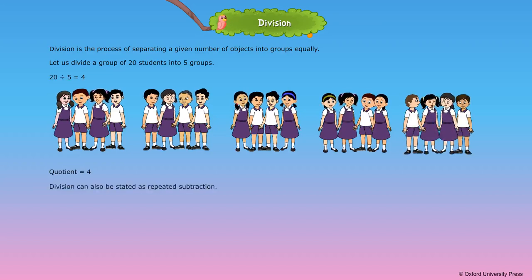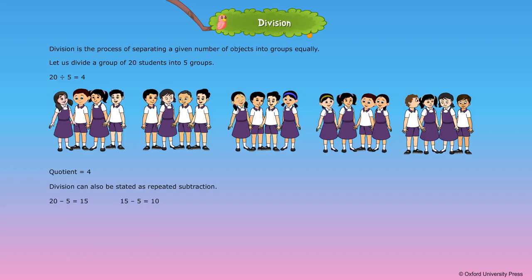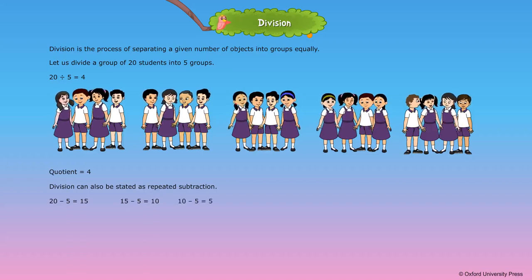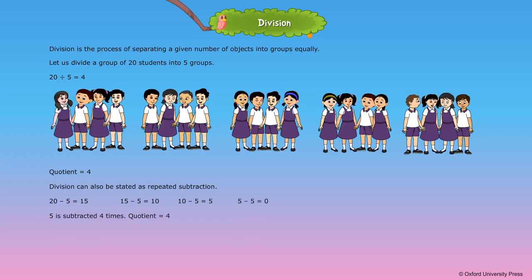Division can also be stated as repeated subtraction. 20 minus 5 is equal to 15. 15 minus 5 is equal to 10. 10 minus 5 is equal to 5. 5 minus 5 is equal to 0. 5 is subtracted 4 times, so the quotient is equal to 4.